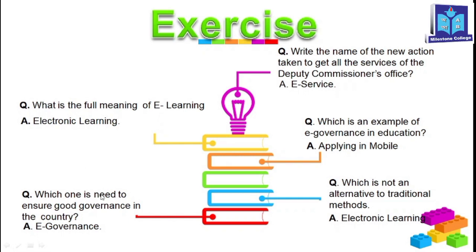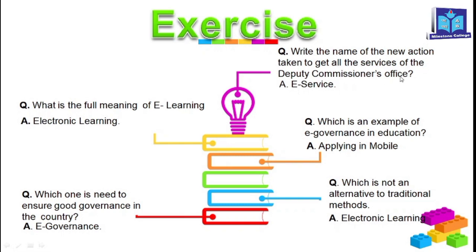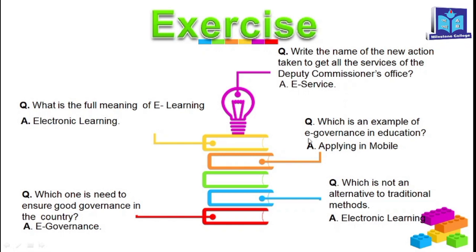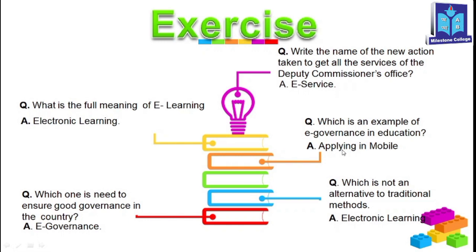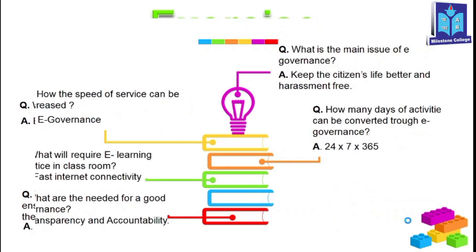Question two: Which one is needed to ensure good governance in the country? The answer is e-governance. Question three: Write down the name of the new action taken to get all the services of the deputy commissioner's office. The answer is e-service. Question four: Which is an example of e-governance in education? The answer is applying via mobile. Question five: Which is not an alternative to traditional methods? The answer is electronic learning.